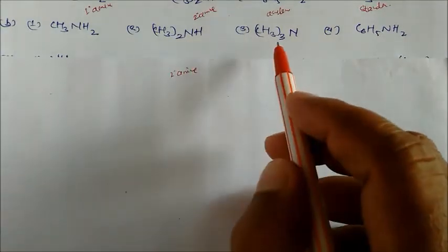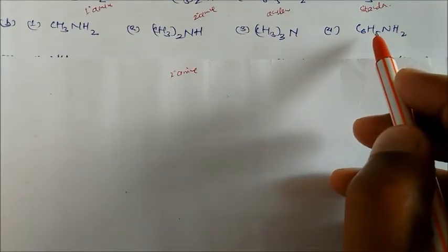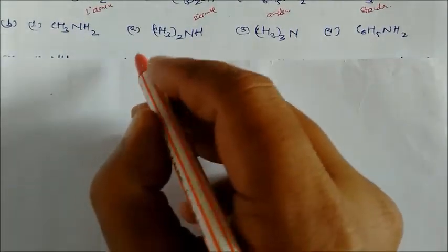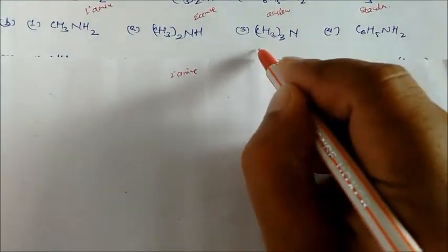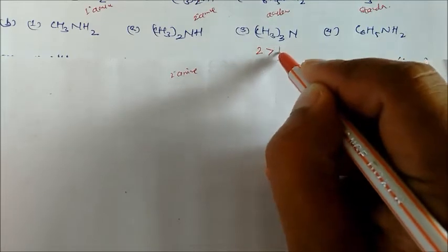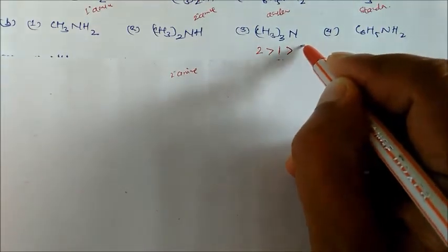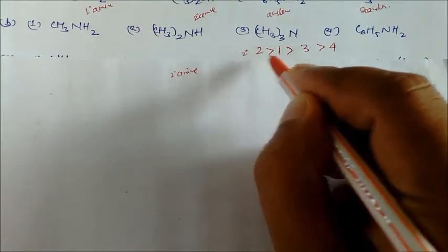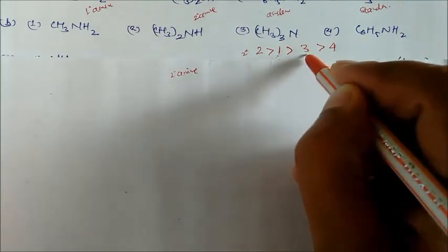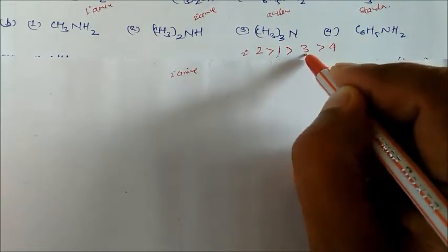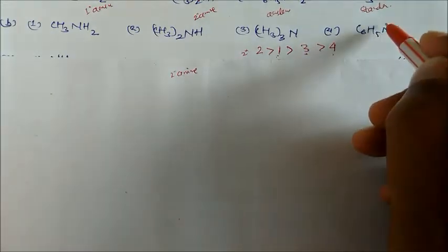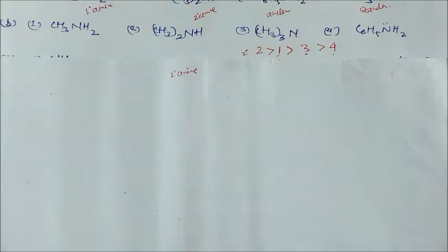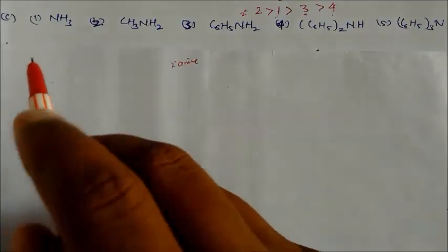In the next problem, we have a primary amine, secondary amine, tertiary amine, and aniline. The order of basicity is: secondary (2) > primary (1) > tertiary (3) > aniline (4). In aniline, the lone pair is not available for basic character due to resonance delocalization.